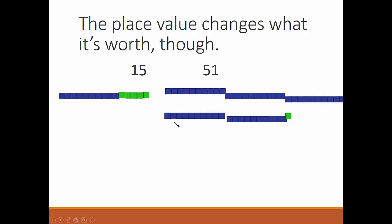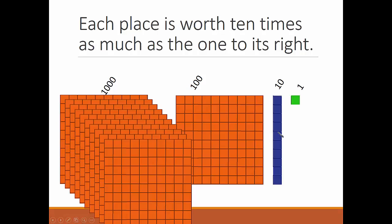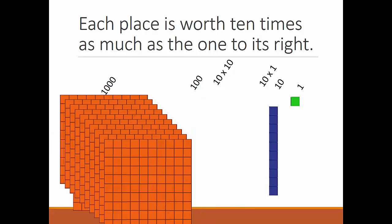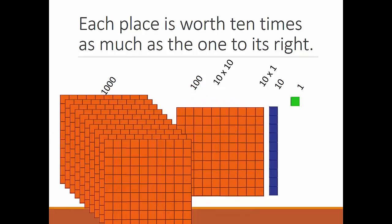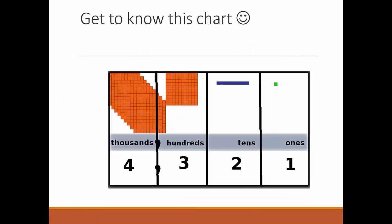Each place is worth ten times more than the one to its right. Ten ones make a ten. Ten times ten is a hundred, and it takes ten hundreds to make a thousand. Get to know this chart: ones, tens, hundreds, thousands.